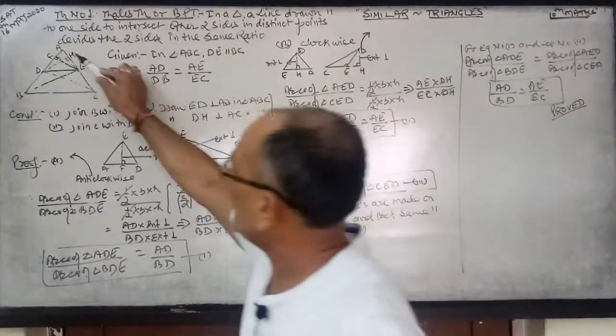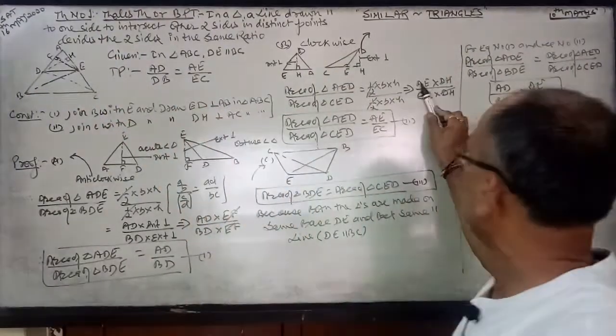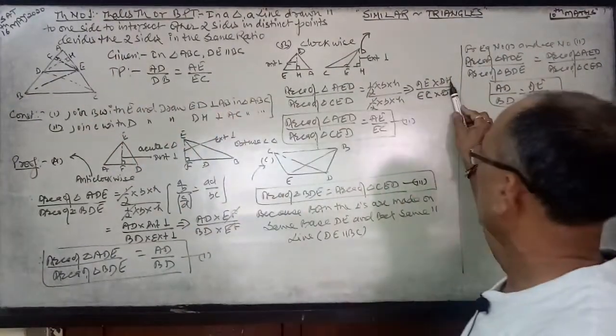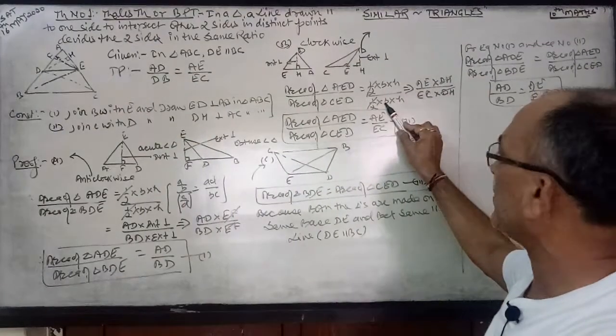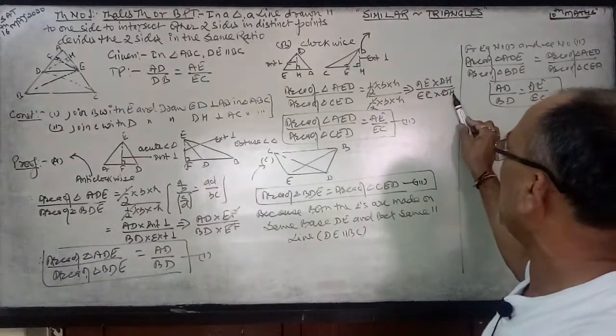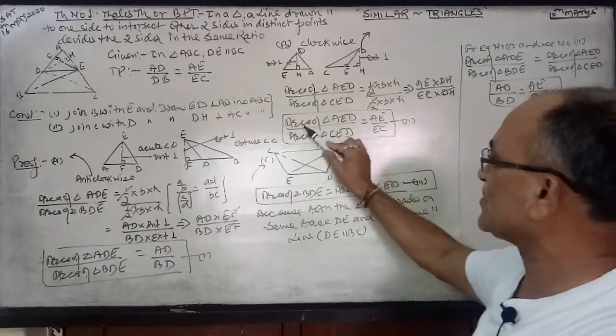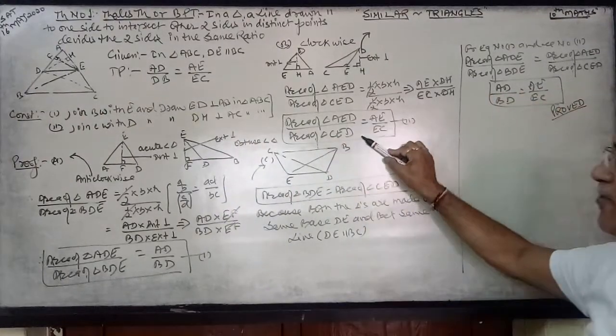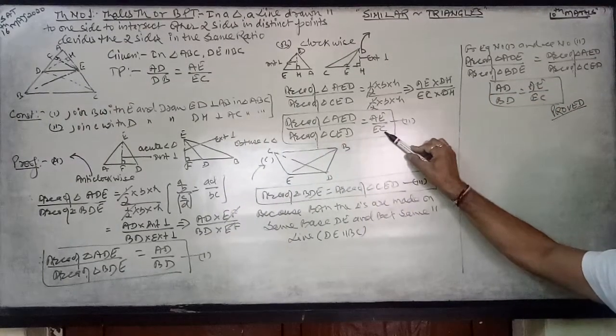So now base for this triangle, base AE is taken and DH is internal perpendicular. And in the lower one, base is CE and DH is cancelled by DH. So area of triangle AED over area of triangle CED equals AE over EC.